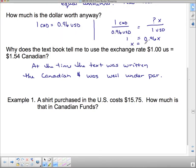So, X equals $1.04. So, what that means is our other conversion rate is that 1 US dollar equals $1.04 Canadian.